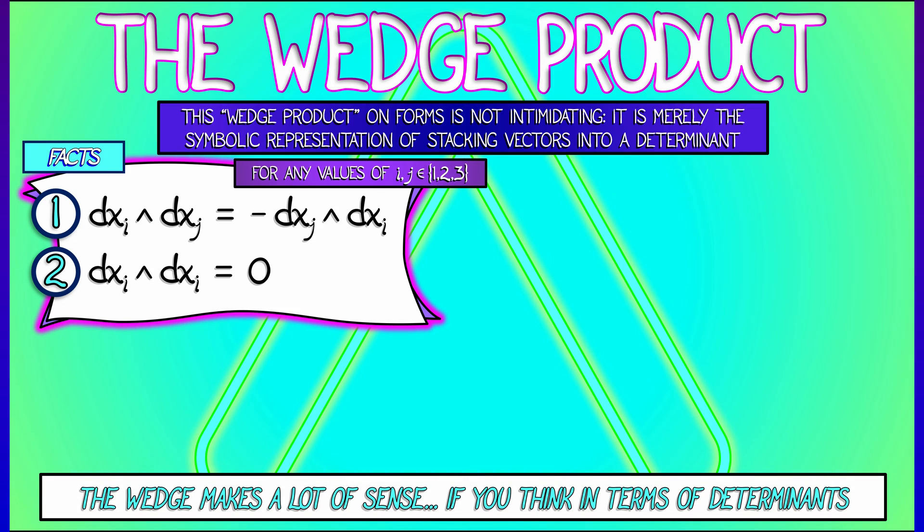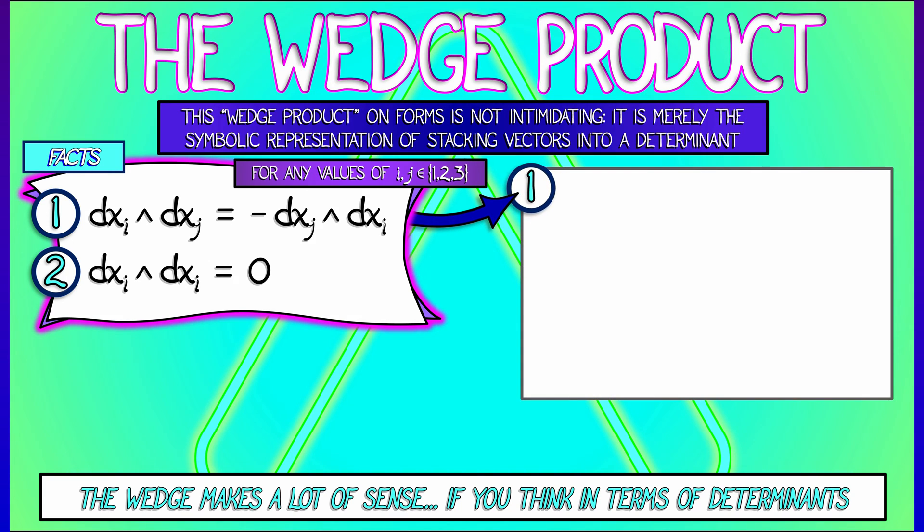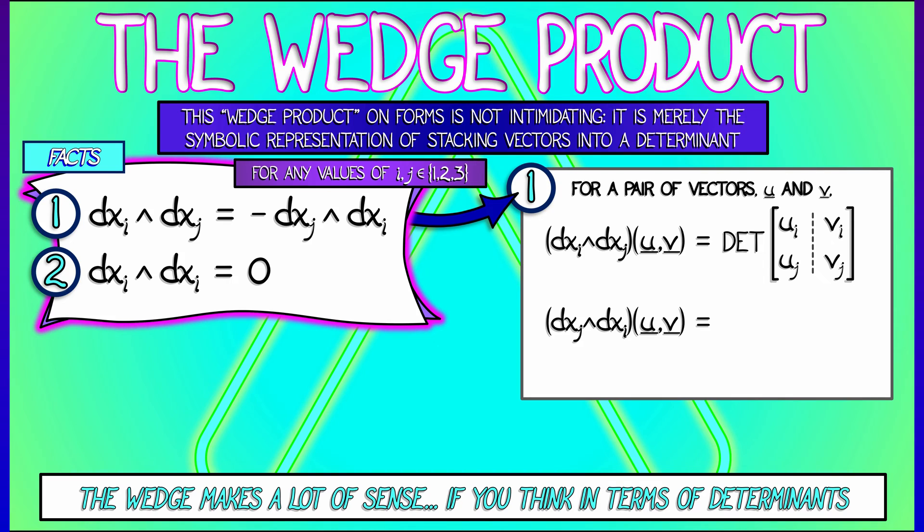Now, these are facts, so you can just roll with them, or you can think about why they are true. Let's consider the first one. Let's say we have a pair of vectors, u and v, and we feed them in that order to dxi wedge dxj. It takes the determinant of the two-by-two matrix that has rows consisting of the i-th components of these vectors and then the j-th components. What happens if we reverse the order? Then it's still a determinant with the same entries, but the two rows are switched. And when you switch the rows, you get a factor of minus 1. That explains why the wedge product is anti-commutative.